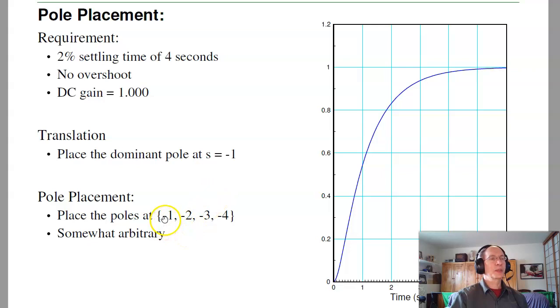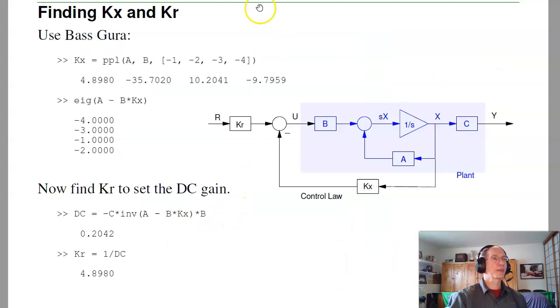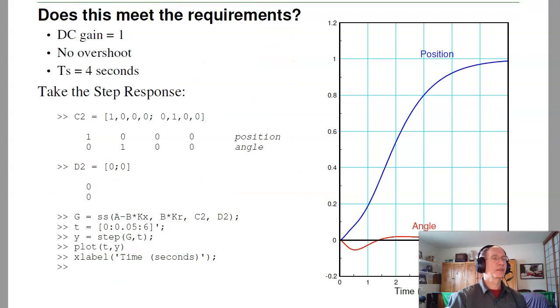So I'm going to pick pole placement to put the dominant pole at minus 1. The other three poles just go somewhere. And what I could do is put them at minus 1, 2, 3, and 4. If I do that, here's my feedback gains. And as a check, using those feedback gains with your gantry system A matrix, gives the poles at minus 1, 2, 3, and 4. That checks. Kr should be 4.89 to make the DC gain 1. And if I check the step response in MATLAB, it looks like it meets the requirements. I go from 0 to 1 in about 4 seconds. It's more like 5 or 6 seconds due to the other poles at minus 2 and minus 3. And the lean is maybe 0.1, 0.06 radians, about 5 degrees. So again, that looks reasonable.